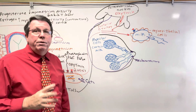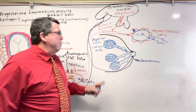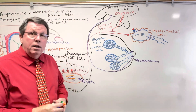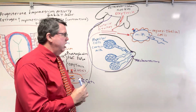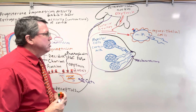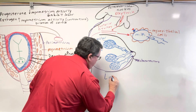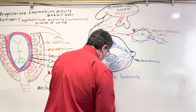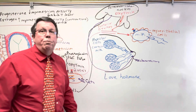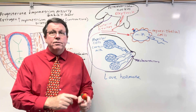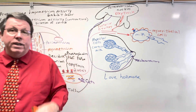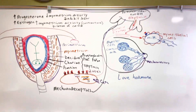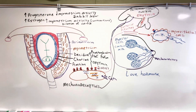One other thing about oxytocin — it has a whole bunch of functions they're not quite sure about, but one thing is that when people are in love, the amount of oxytocin increases, and it also increases during orgasm. So it's sometimes known as the love hormone. Anyway, that's it for oxytocin. I hope you enjoyed the video — please hit the like and subscribe button, and we'll catch you next time.